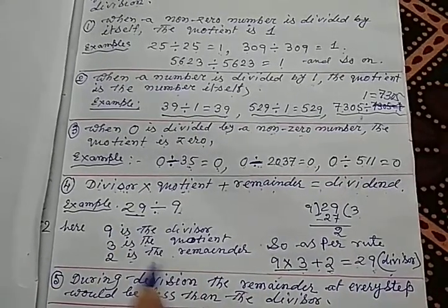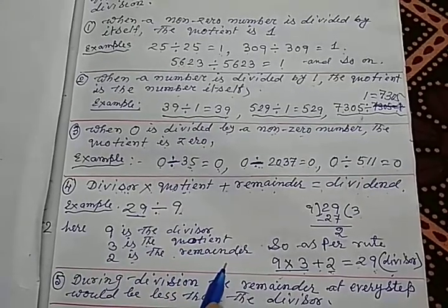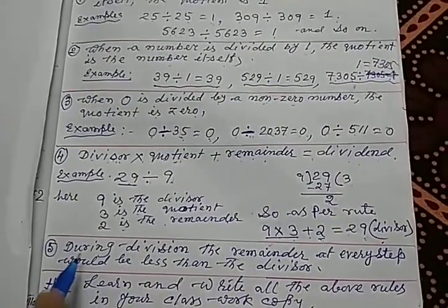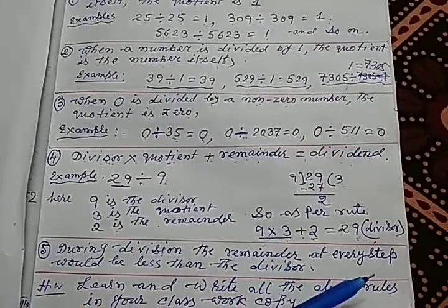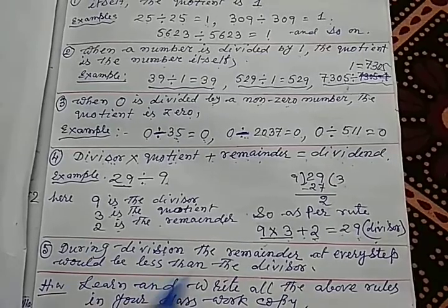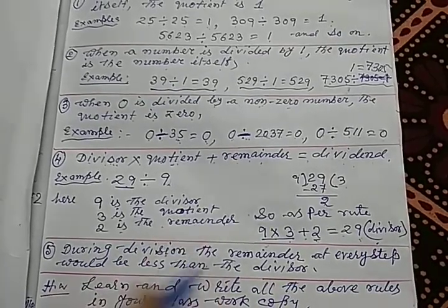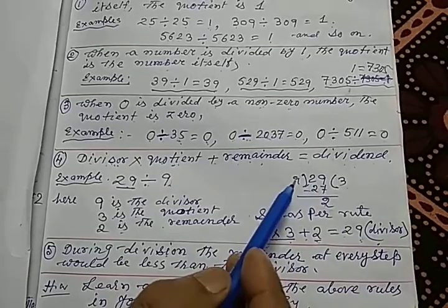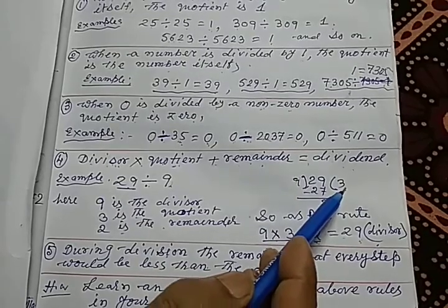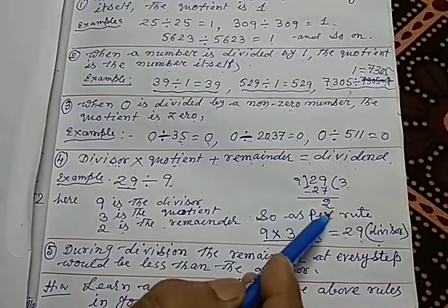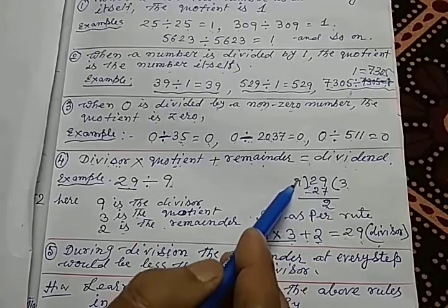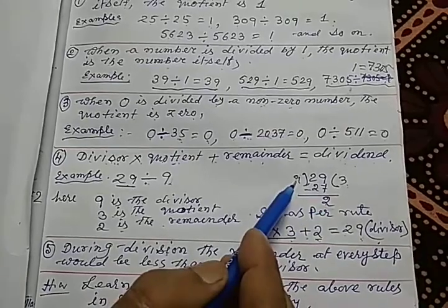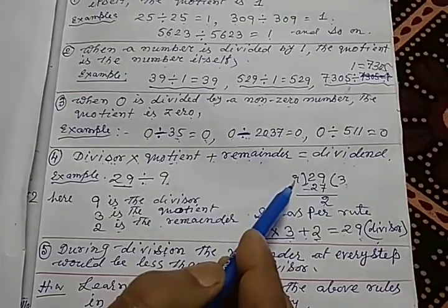And the last important rule: during division, the remainder at every step must be less than the divisor. For example, when 29 is divided by 9, the quotient is 3 and the remainder is 2. Since 2 is less than 9, the remainder is less than the divisor — that confirms the division is correct.